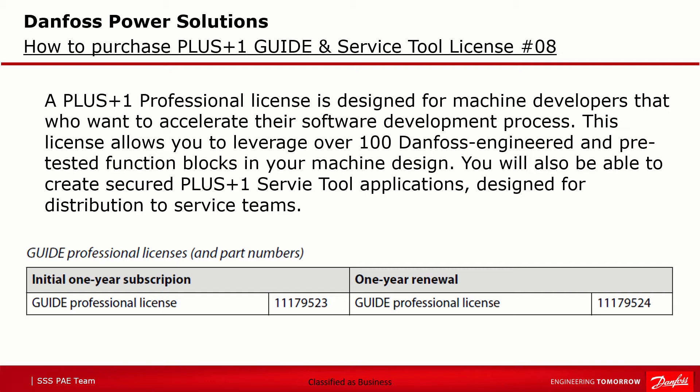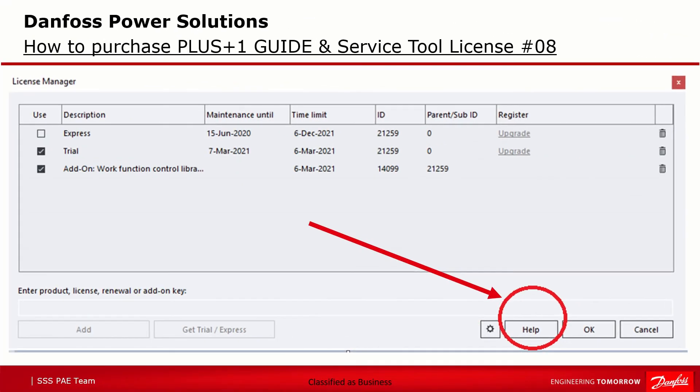The renewal license is used to renew the maintenance of your existing Guide Professional license for another year and receive the newest updated versions during that time. After purchasing the right Guide Professional license, you will be sent an email with a product key that will allow you to activate a license key. Please follow the instructions under Help in the License Manager on how to add the key and activate the license.